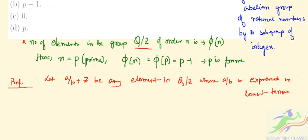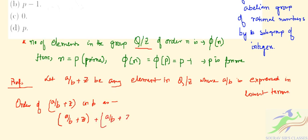So now order of A by B plus Z is B. It can be written as A by B plus Z. Z is the set of integers, plus A by B, up to A by B plus Z into B times. So Z is nothing but Z, which is the set of integers.